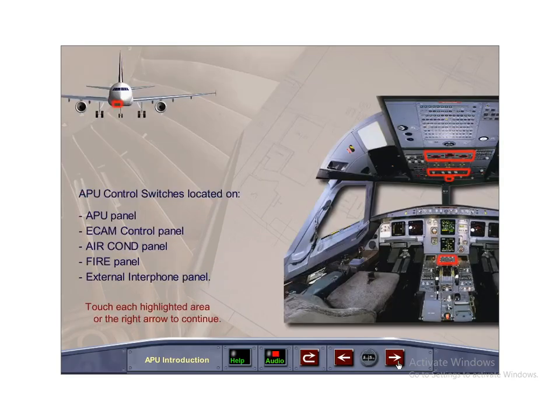The APU control switches are found on the overhead APU panel, the ECAM control panel, the air conditioning panel, and the overhead fire panel. Additional control switches can be found on the external interphone panel.